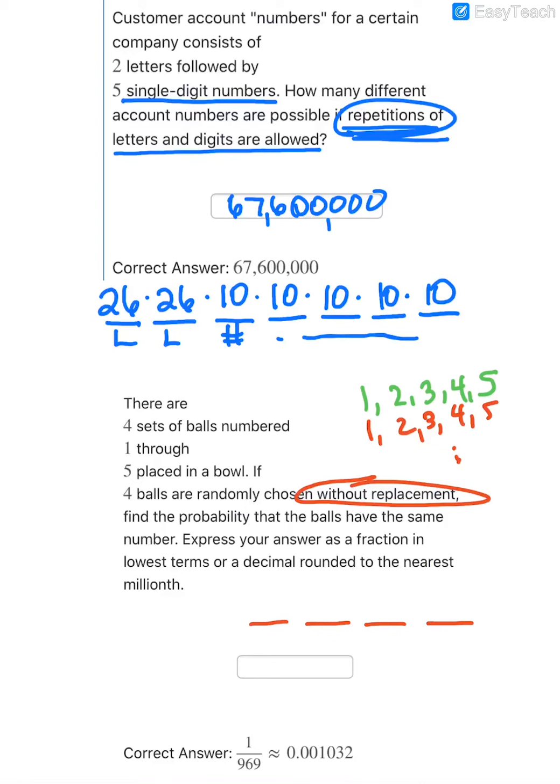And we want to find the probability that the balls have the same number. Now let's just focus on one number for a minute. Let's say we want to find the probability that all the balls are number 1. So we know starting out, since there's four sets of balls, there are four balls with the number 1 in the bowl out of 20 total balls. So that would be the chance that the first ball is a 1. Now, without replacement means I can't put it back. So on that second draw, there would only be three balls left with that same number 1 out of 19 that are in the bowl.